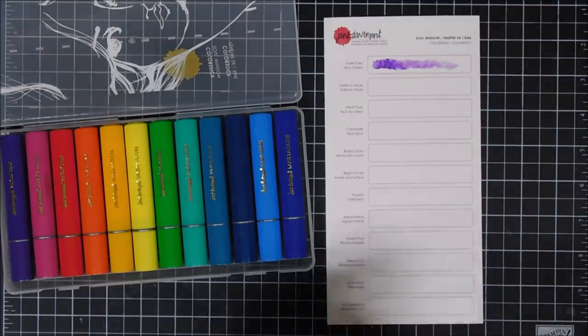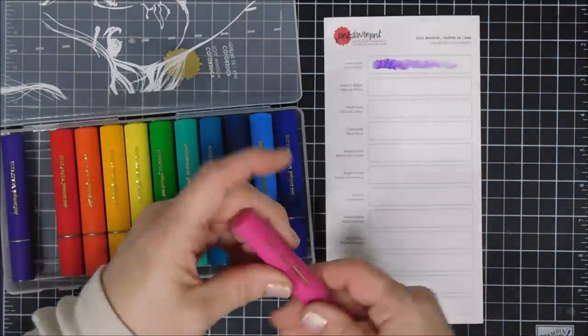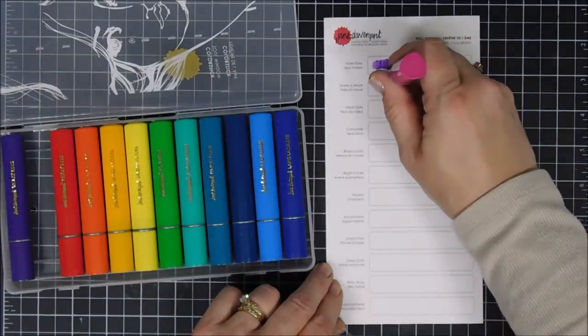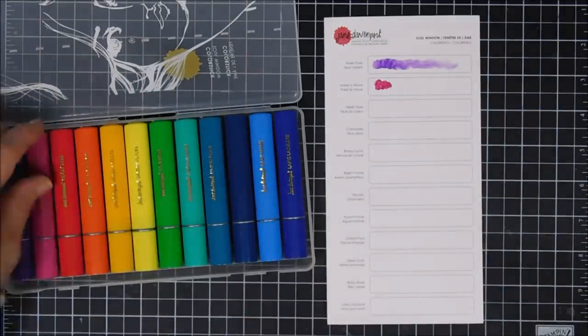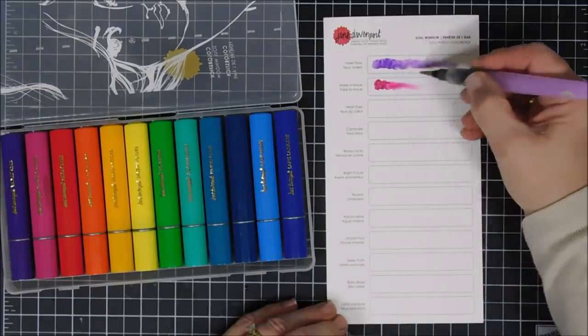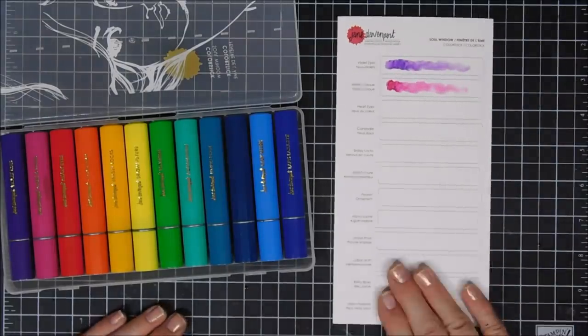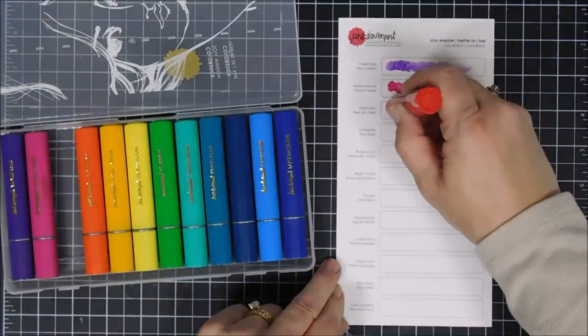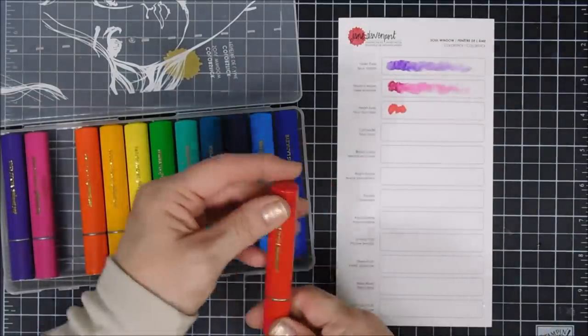The gel crayons do come with a swatch sheet which I'm using right now. On the reverse side there's a beautiful image of a facial feature like on the very front of your case, and if you wanted to color that in with these you could too.